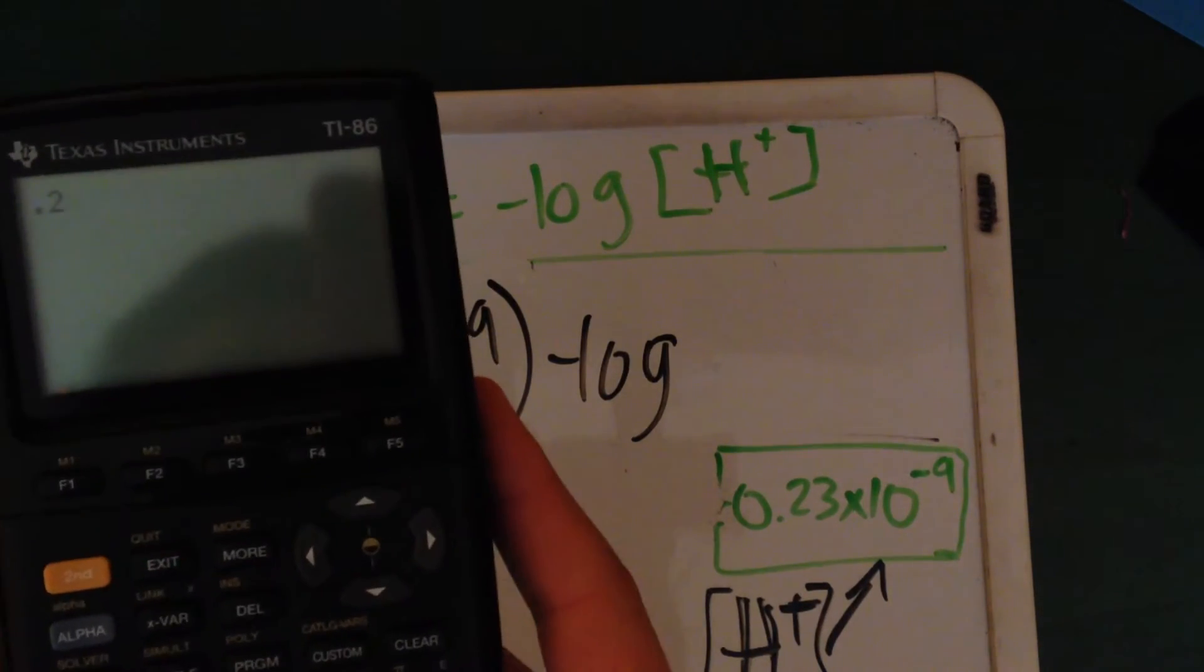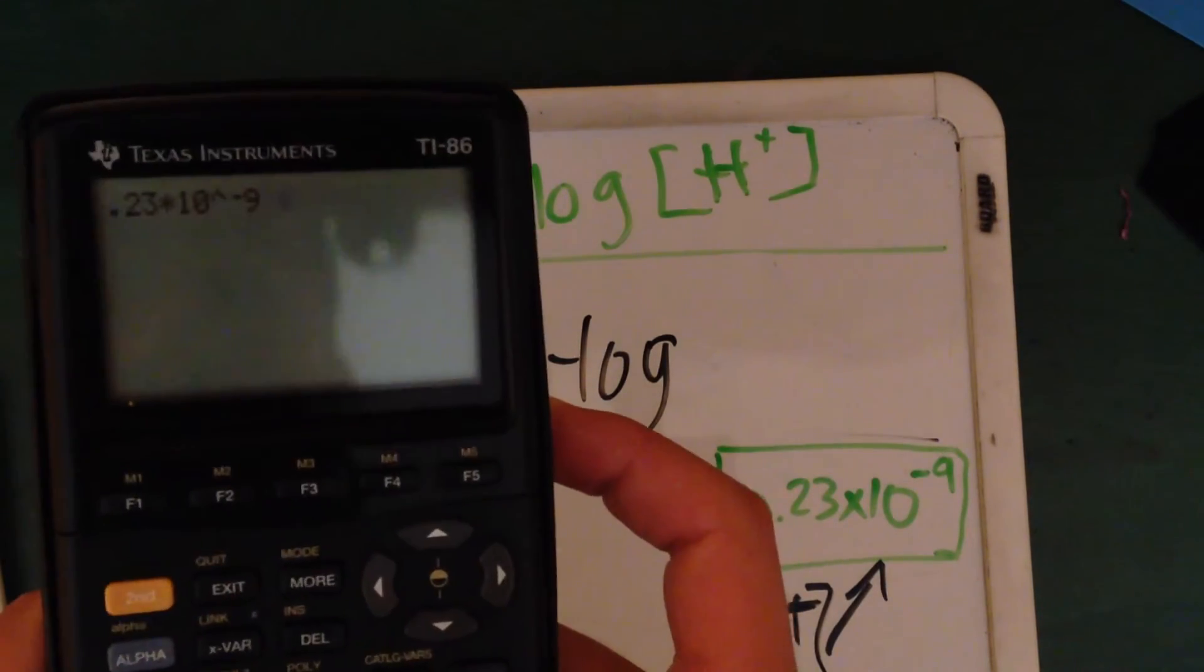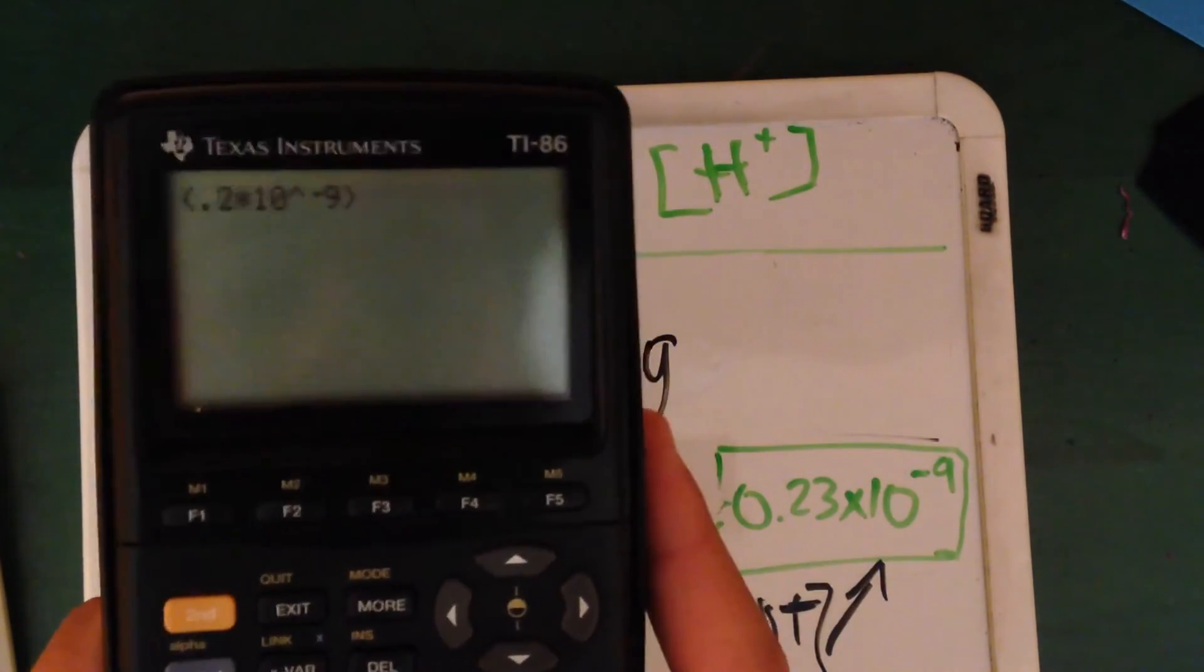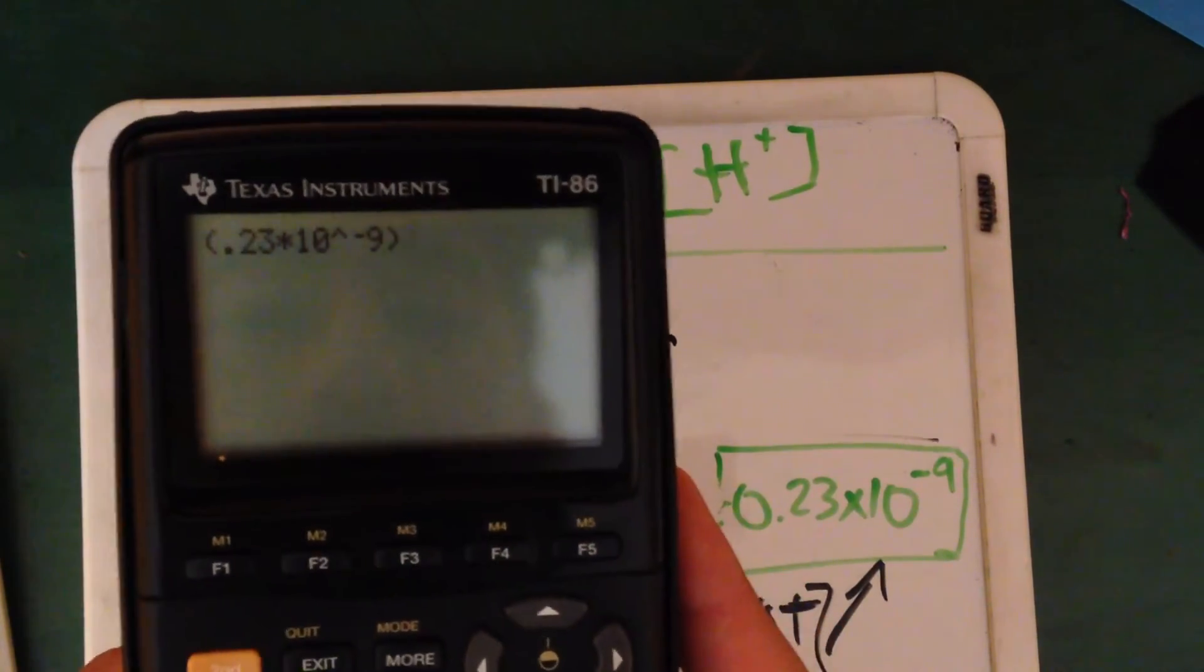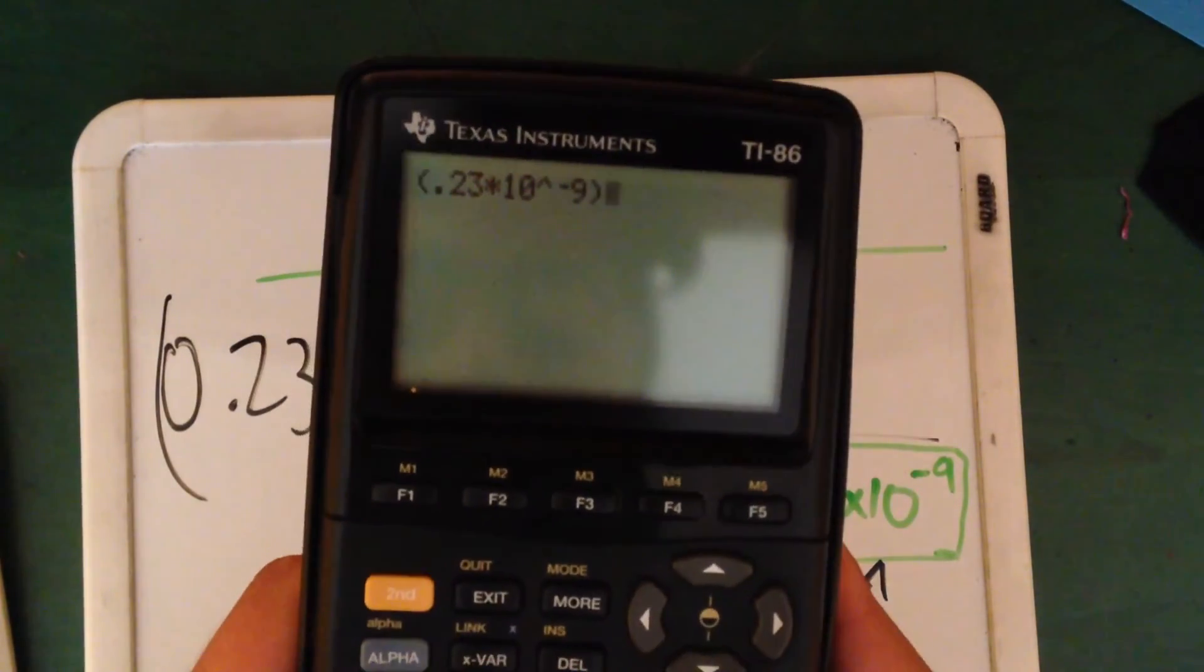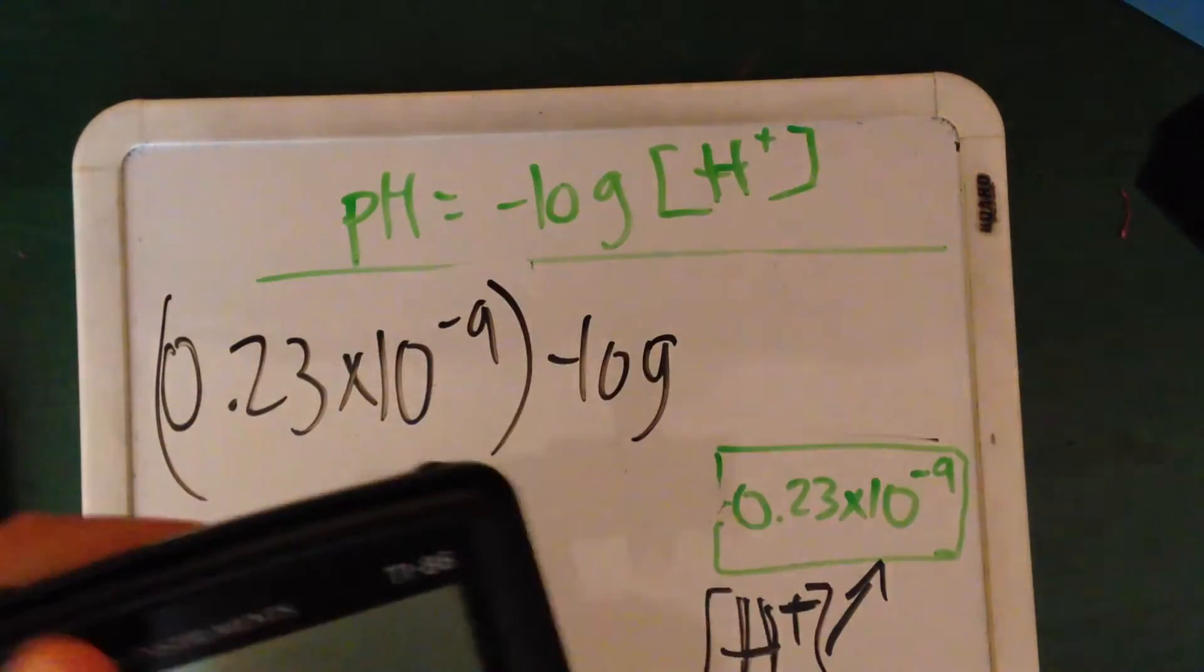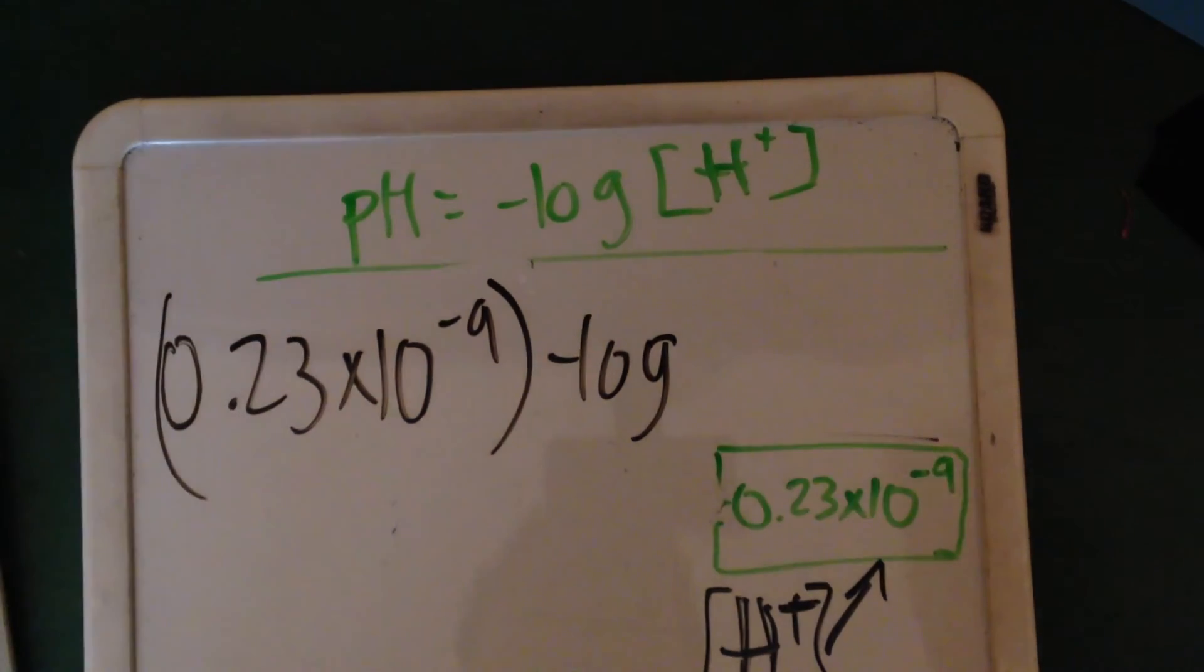Let's plug it in here. 0.23 times 10 to the negative 9. And we want to find the negative log for that. Give us 0.23 times 10 to the negative 9. Find the negative log for this. And it's 9.63. So your answer should be 9.63 after plugging it in.